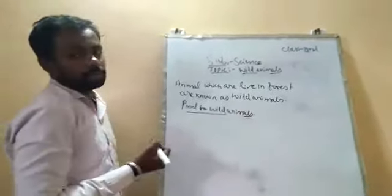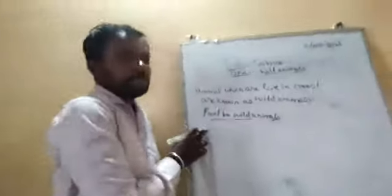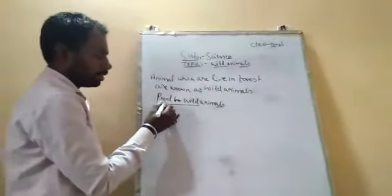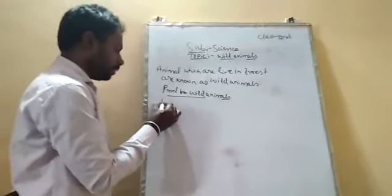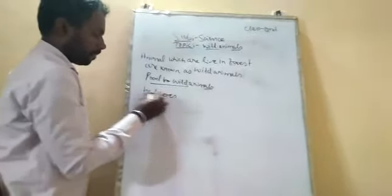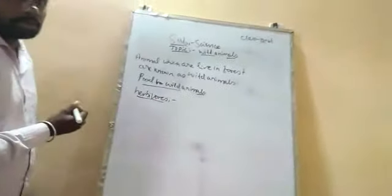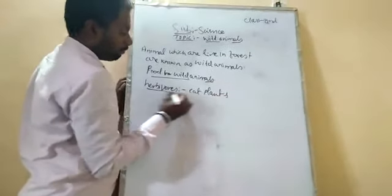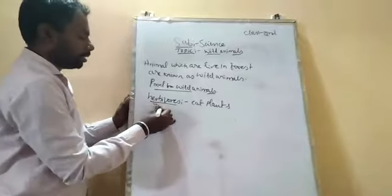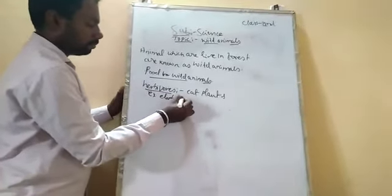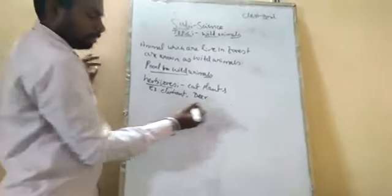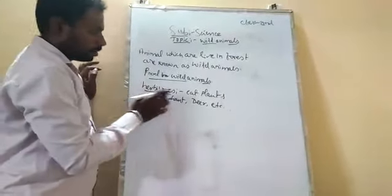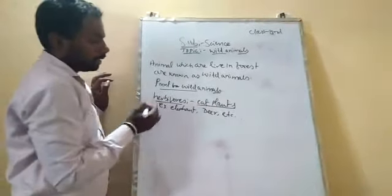Now we have food for wild animals. Here, some of the animals eat only plants. They are known as herbivores. Depending upon the food they eat, we classify the animals into herbivores. Herbivores eat plants. Examples of herbivores are the elephant, deer, etc. Those animals that eat plants are known as herbivores.